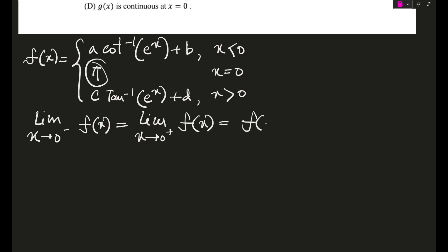f of 0, right? So f of 0, I hope if x is tending to 0 plus minus whatever, e power x will always tend to 1. So actually using the principal values, this cot inverse x and tan inverse x they would come out to be pi by 4, so this would become a pi by 4 plus